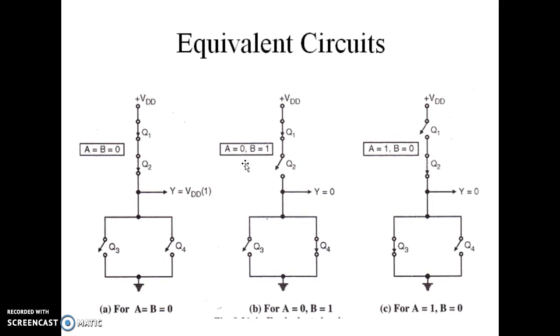For A equal to 0, B equal to 1, this PMOS Q1 is on and Q3 is off. Q2 is off and Q4 is on. Either PMOS is on or NMOS is on. So that's why here, as VDD is not connected to the output and GND is connected to the output, output is equal to 0.